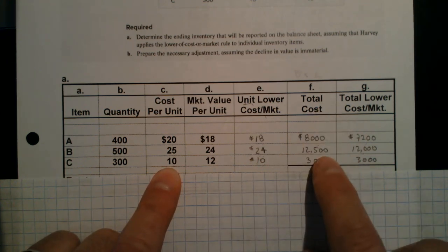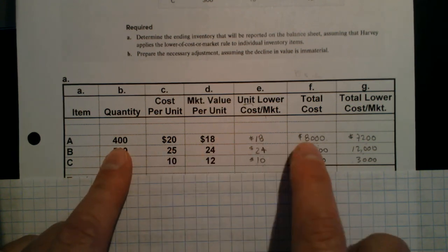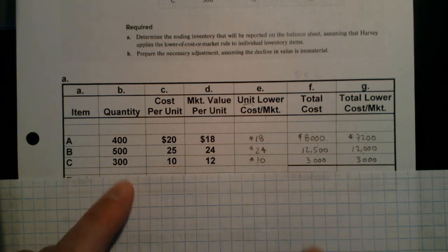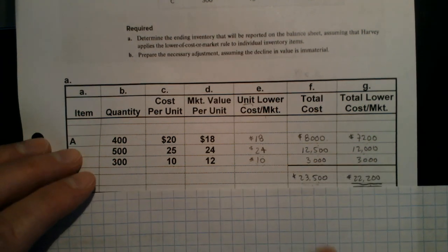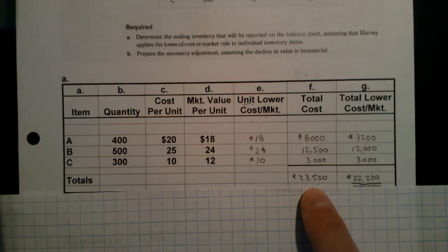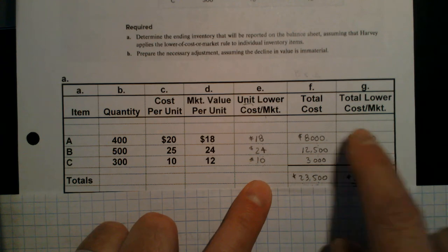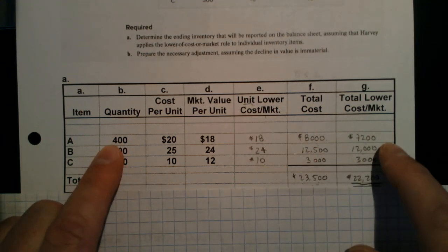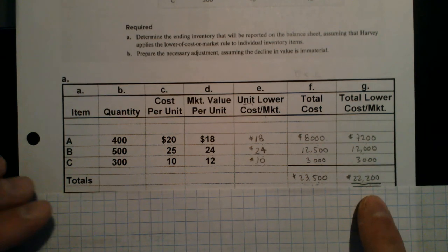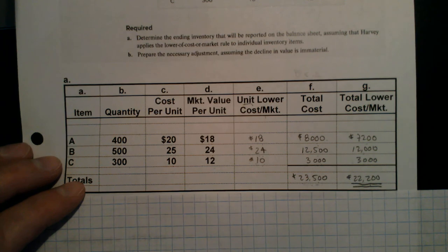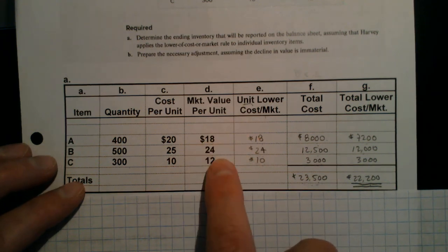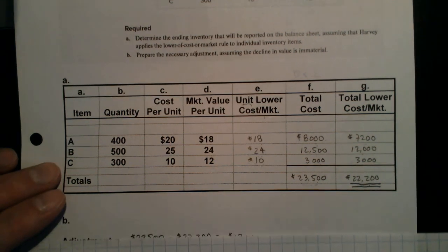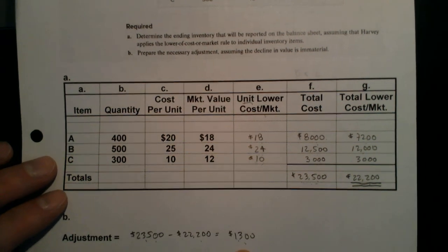Column F asks for total costs: 400 times $20 is $8,000; 500 times $25 is $12,500; 300 times $10 is $3,000 — total cost of inventory is $23,500. Multiplying the lower-of-cost-or-market values by quantity gives a total of $22,200. Because two items have a market price below what I paid, I need to recognize that hit now — the adjustment is $1,300.